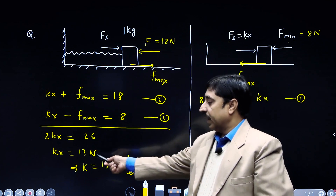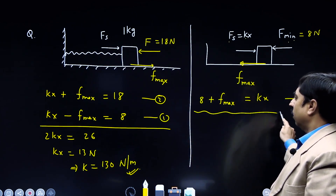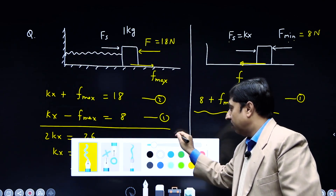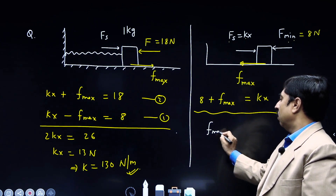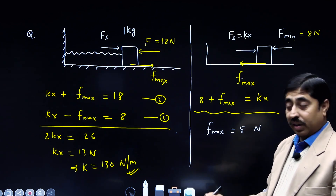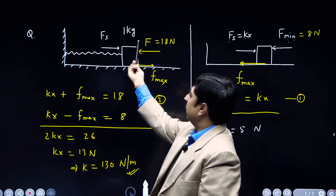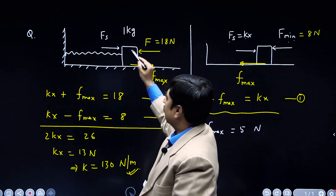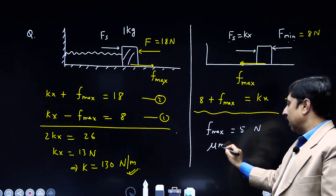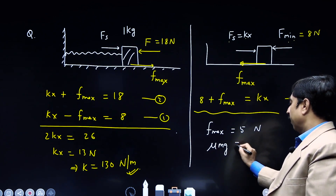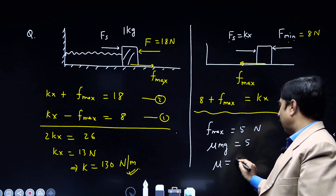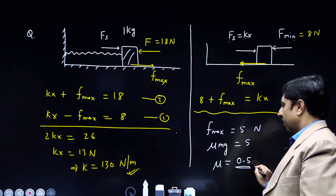Now that we know K·X = 13 Newton, substituting into the first equation gives f_max = 13 minus 8 = 5 Newton. f_max equals mu times the normal force, which equals mu times mg. So mu·mg = 5. With mass 1 kg and g = 10 m/s², mu = 5 divided by 10 = 0.5. This solves the problem.